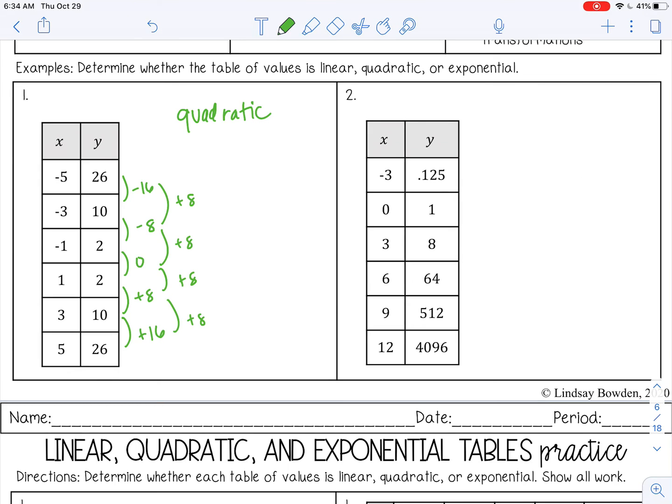But let's check. I'm going to start down here at the bottom and divide. So 4096 divided by 512, that gives me 8. 512 divided by 64, that gives me 8. 64 divided by 8 is 8. 8 divided by 1 is 8. Okay, so this is definitely exponential.